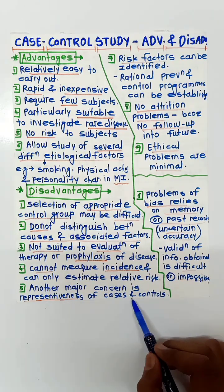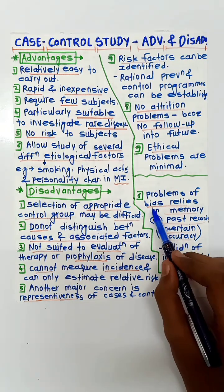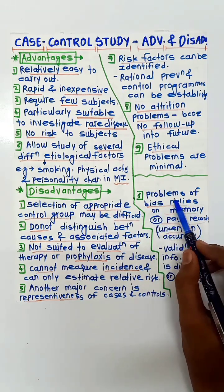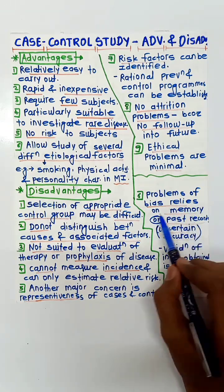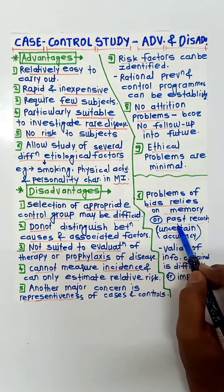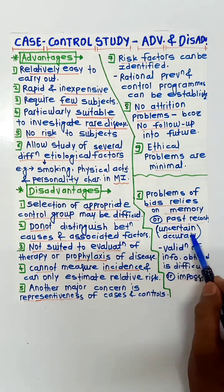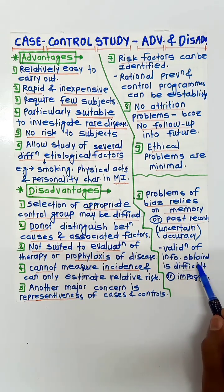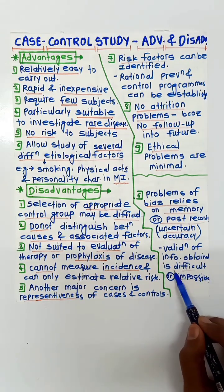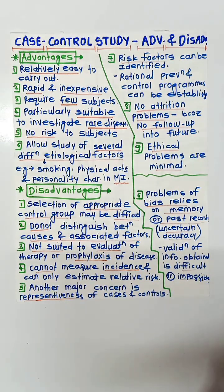Another major concern is the representativeness of cases and controls. The last disadvantage is that there are problems of bias — it relies on memory or past records, so there is uncertain accuracy, and validation of information obtained is difficult or even impossible in some cases.